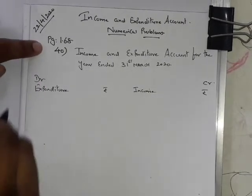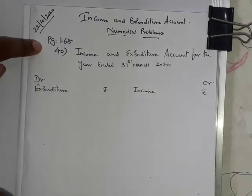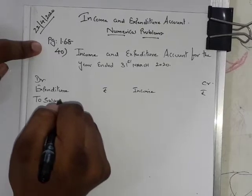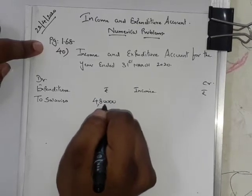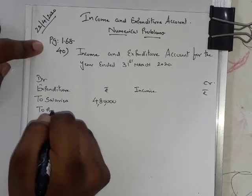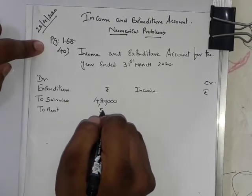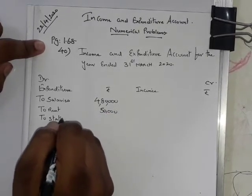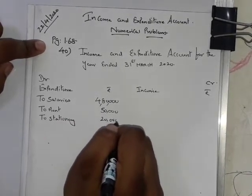First, on the expenditure side we record all applicable payments. First item: To Salaries — value rupees 4,80,000. Next: To Rent — value rupees 50,000. Next item is stationery: To Stationery — value rupees 20,000. Defense bonds, furniture, and bicycles will not come on this side.